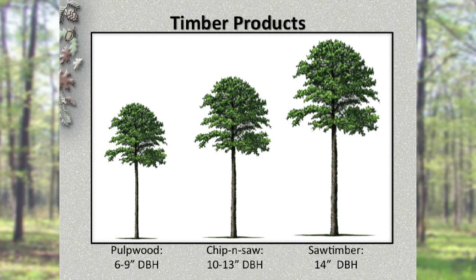Another way to think of the three primary product categories are small, medium, and large trees. Obviously, the larger trees are worth more, and it takes longer for trees to grow into these product categories. Also, trees with few to no limbs in the first 16-foot log section make the trees more valuable for lumber production, as limbs translate into knots in lumber, which make the lumber less valuable. So, the fewer limbs, the better.